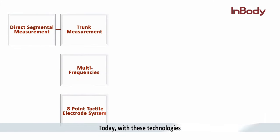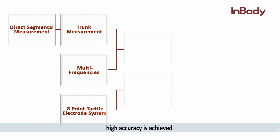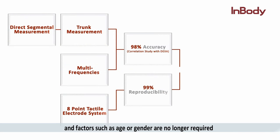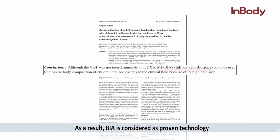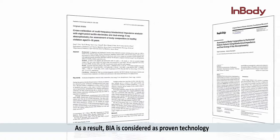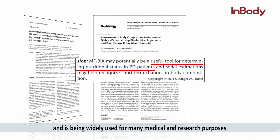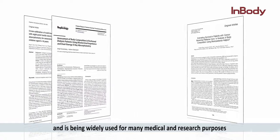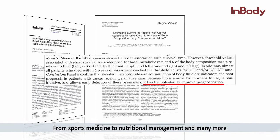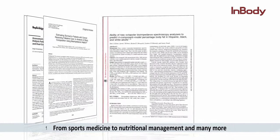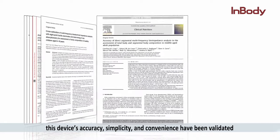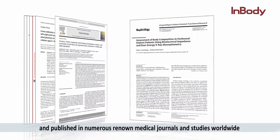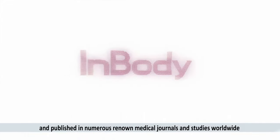Today, with these technologies, high accuracy is achieved and factors such as age or gender are no longer required. As a result, BIA is considered proven technology and is being widely used for many medical and research purposes — from sports medicine to nutritional management and many more. This device's accuracy, simplicity, and convenience have been validated and published in numerous renowned medical journals and studies worldwide.